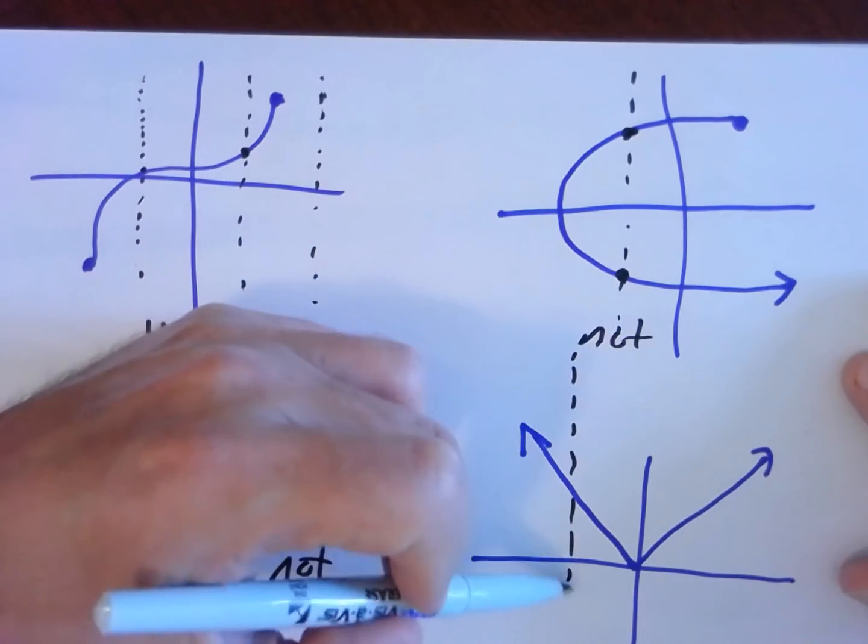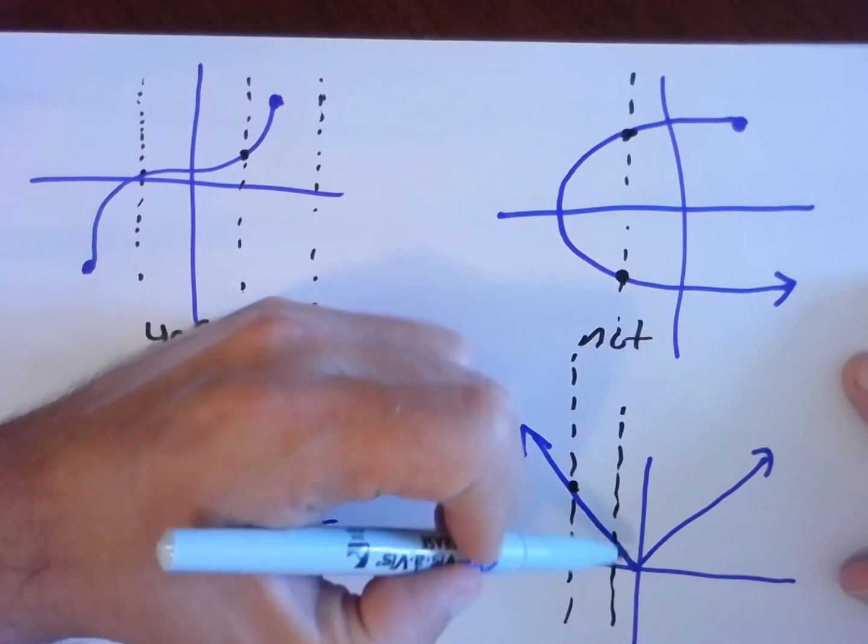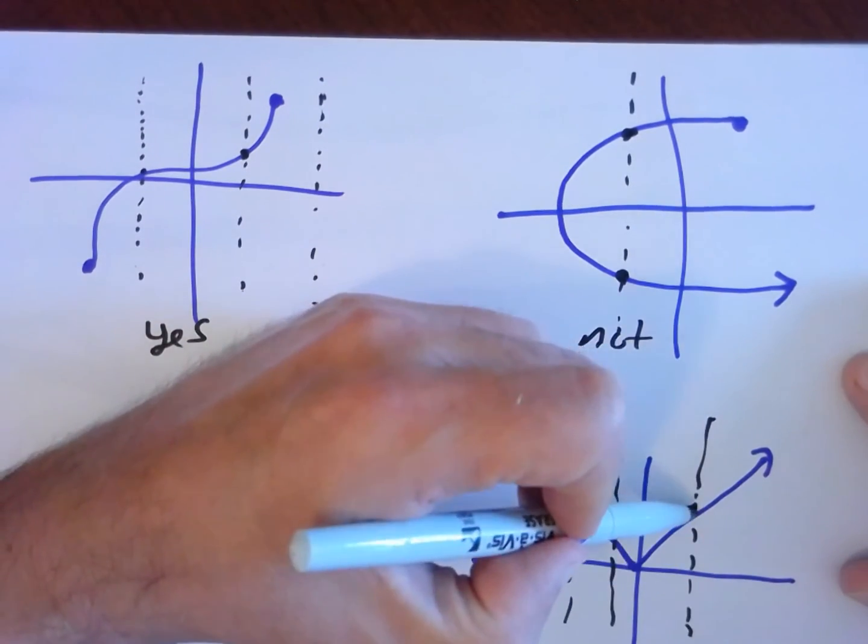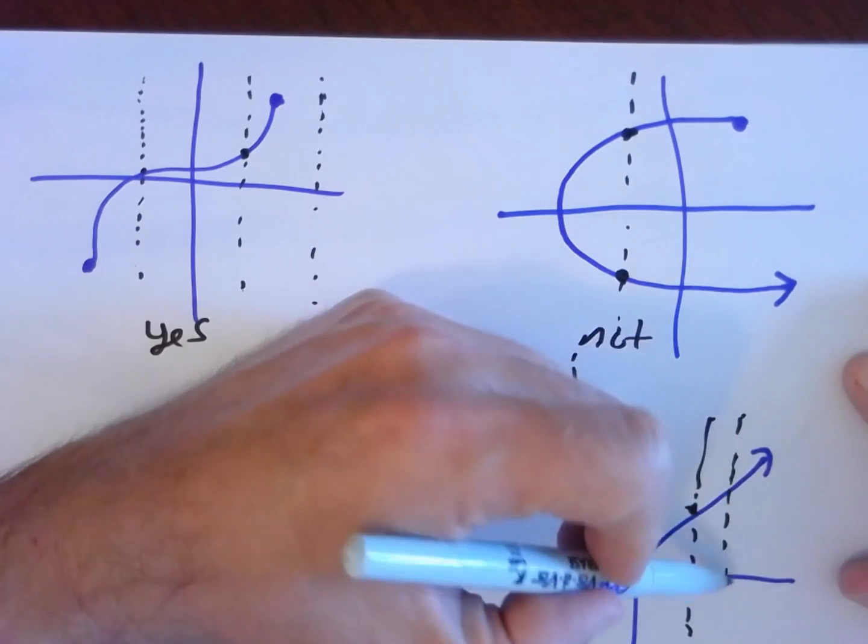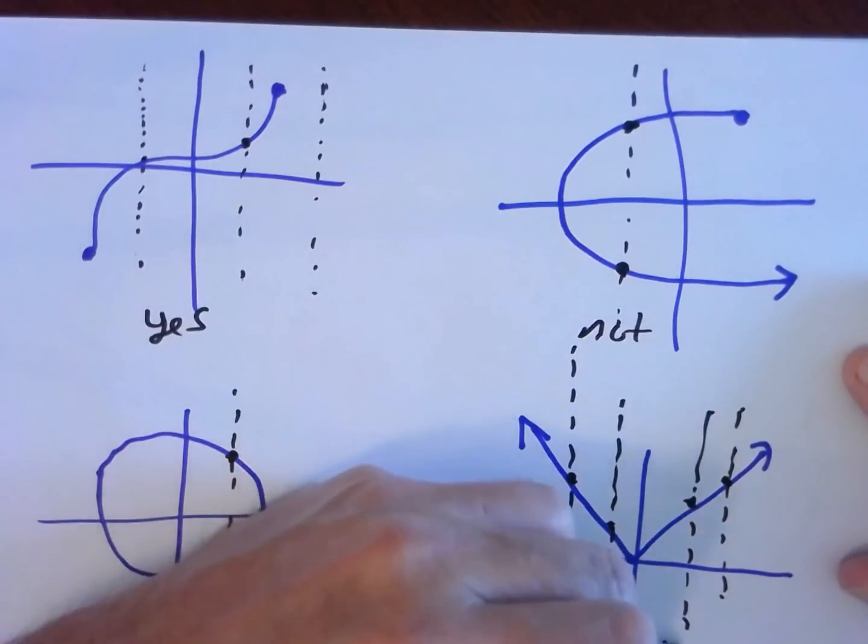Every possible vertical line you could draw will hit the graph at most once. I'm drawing a bunch of vertical lines here. Every one of them will hit the graph, in this case, exactly once. This is a function. Yes.